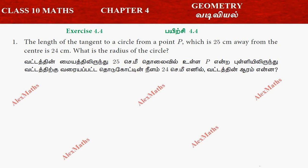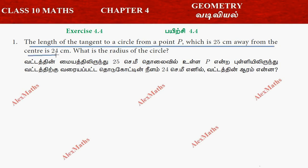Hi students, this is Alex here. Exercise 4.4, question number 1: the length of the tangent to the circle from a point P, which is 25 cm away from the center, is 24 cm. What is the radius of the circle?